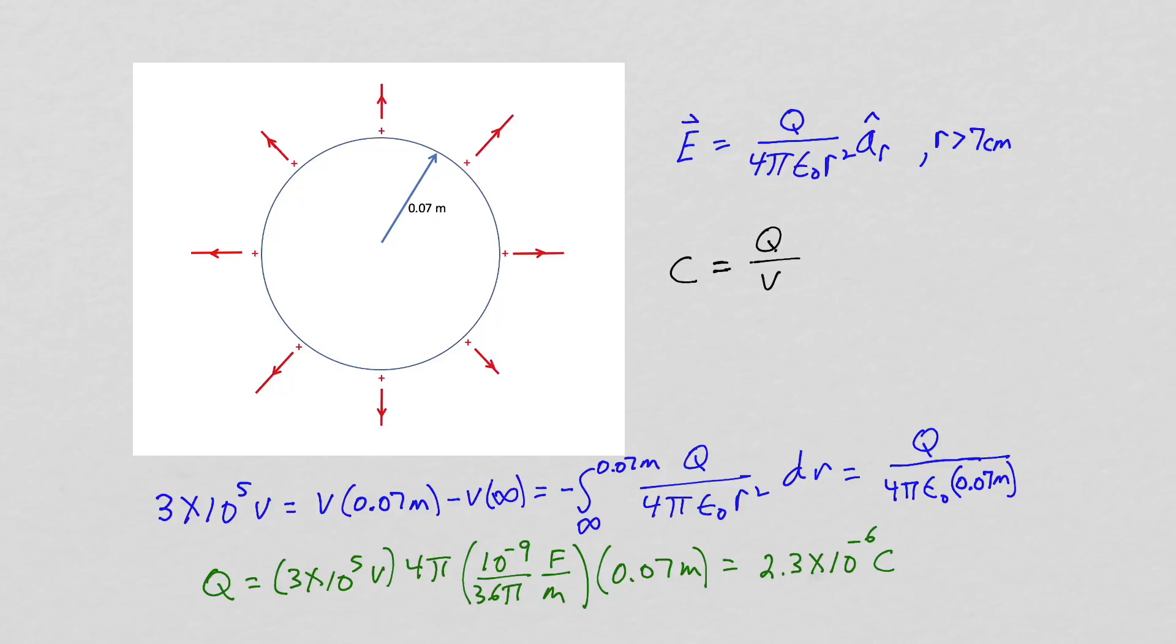Another way of thinking about this is that the charge on the Van de Graaff generator is small because the capacitance is small, capacitance being the ratio of the charge to the potential. So for our Van de Graaff generator, the capacitance is approximately 7.7 picofarads.